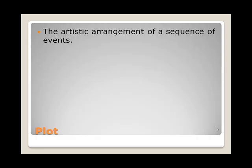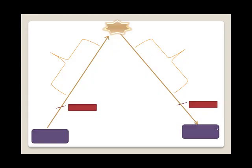Plot is the artistic arrangement of a sequence of events. Story is just the telling of a sequence of events — first this happened, then that happened — whereas plot is the artistic arrangement. That means that it is deliberately arranged on purpose to evoke a certain reaction or create a certain experience. So the Freytag Pyramid is the plotting of the plot; it is the visual presentation of that.